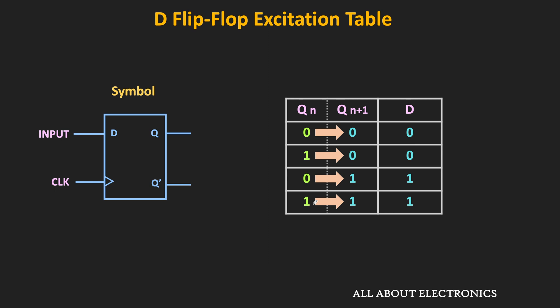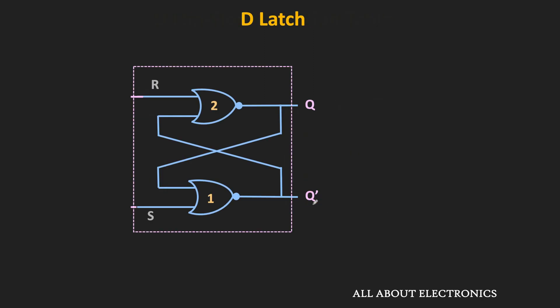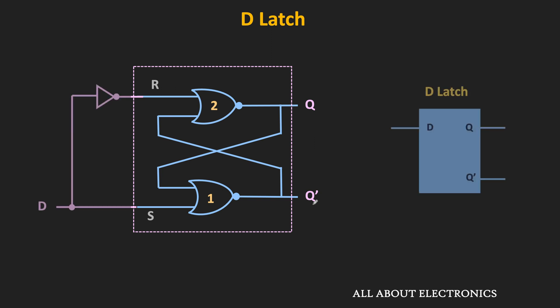Now let us see the internal circuit of this D flip-flop. First, we will see the circuit of the D latch and the gated D latch, and then we will see how it can be converted into the D flip-flop. This is the basic circuit of the SR latch. By adding one more NOT gate, it can be converted into the D latch.